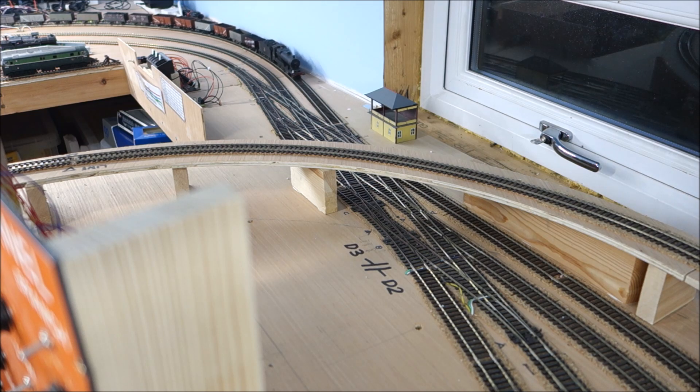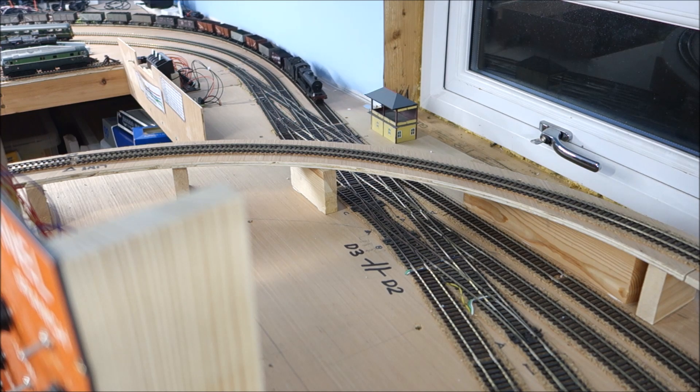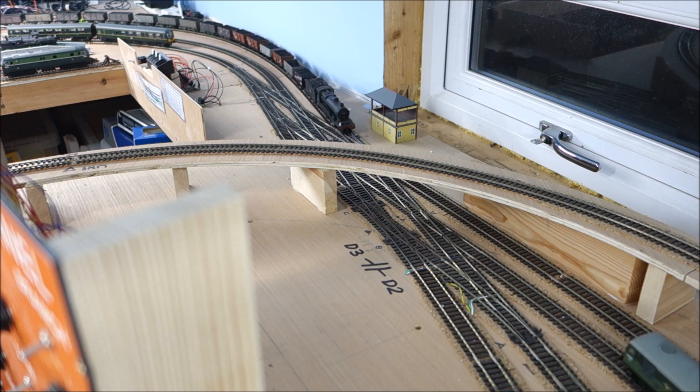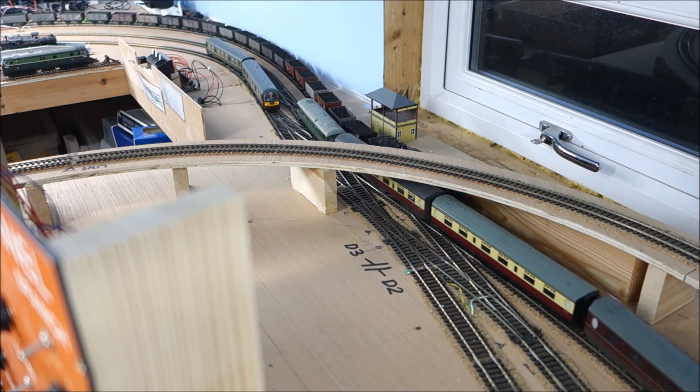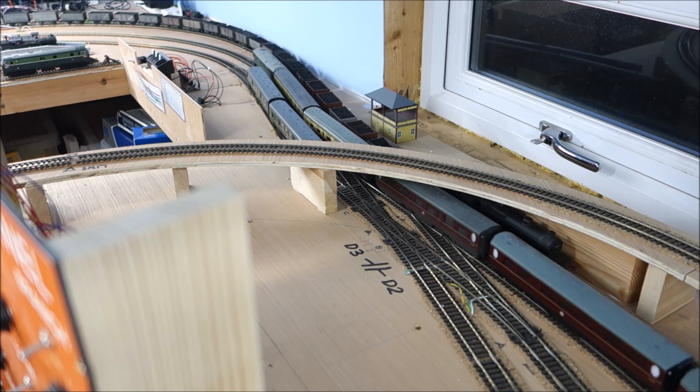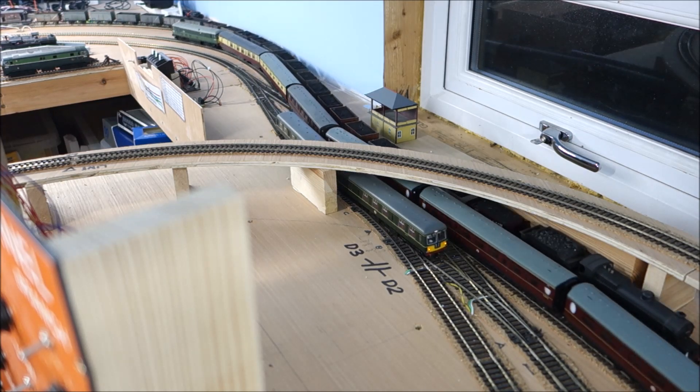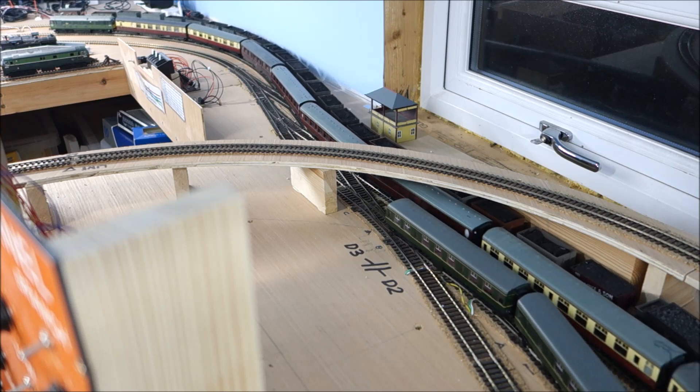The express is travelling on the down main, that's the blue. And then the DMU is going to come from the Trinity Square storage, which is yellow on the plan, around the bypass and down to the bottom tracks, which are the access to Trinity Square.